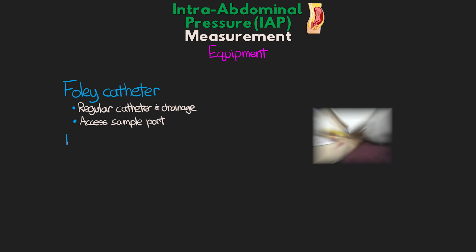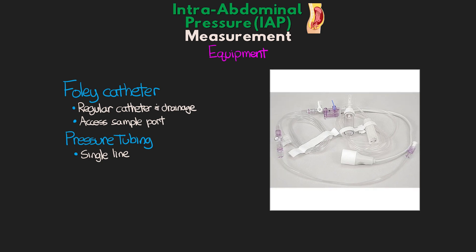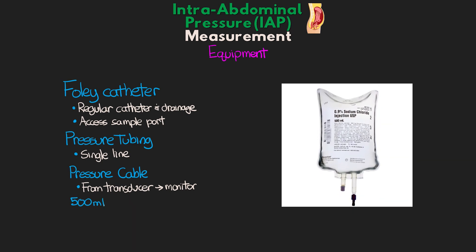Next, we're going to need pressure tubing — just the single line pressure tubing that we would typically use for either an A-line or a CVP. We're also going to need the pressure cable, which goes from the pressure transducer to the monitor so we can get our readings. You'll also need a 500 milliliter bag of 0.9% saline. This could be a smaller or larger bag — 500 mL is usually good, especially if we're going to be doing serial intra-abdominal pressure measurements, so you have enough fluid without wasting too much.